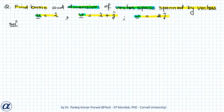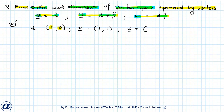Those linearly independent vectors will form the basis of our vector space. So let's rewrite these vectors in component form, since all vectors are in terms of î and ĵ only, giving two components: i-component and j-component. So u can be written as (1, 0), v equals (1, 1), and w equals (0, 2).